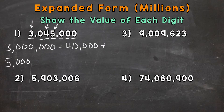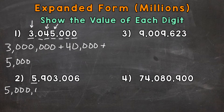On to number 2, where we have 5,903,006. We'll start with the greatest valued digit, the digit furthest to the left, which is this 5. The value of that 5 is 5 million, because it's sitting in the millions place. Making our way to the right, next we have a 9 in the hundred thousands place, so that 9 has a value of 900,000.